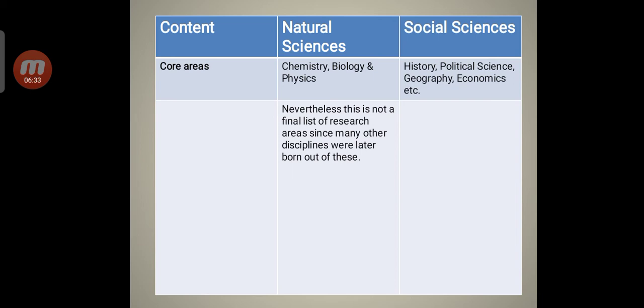What are the core areas of natural sciences and social sciences? Natural sciences: chemistry, biology and physics. Social sciences: history, political science, geography, and economics.